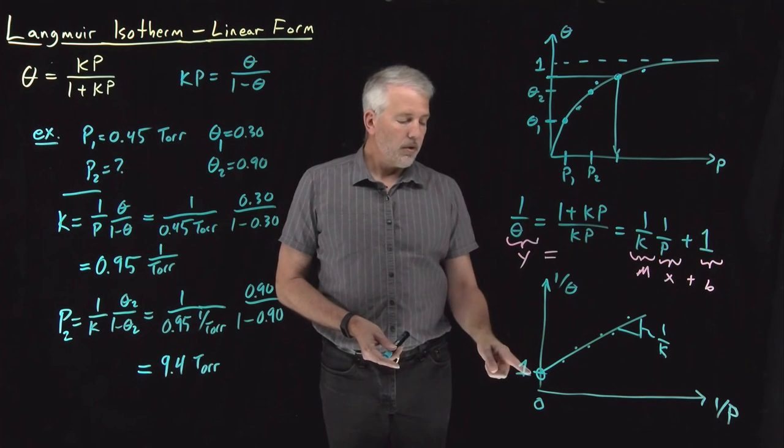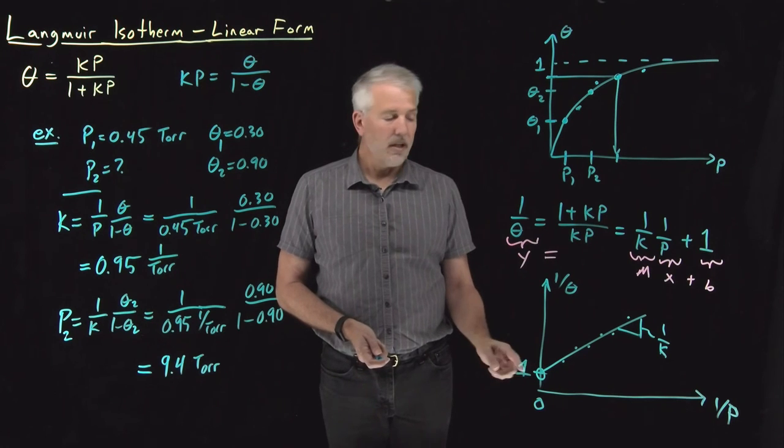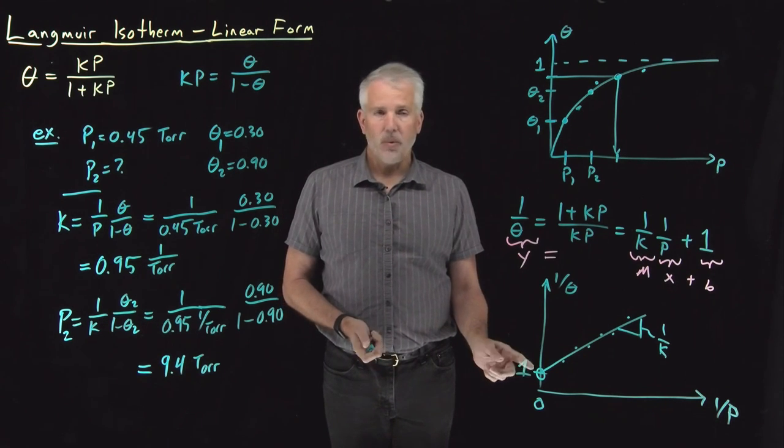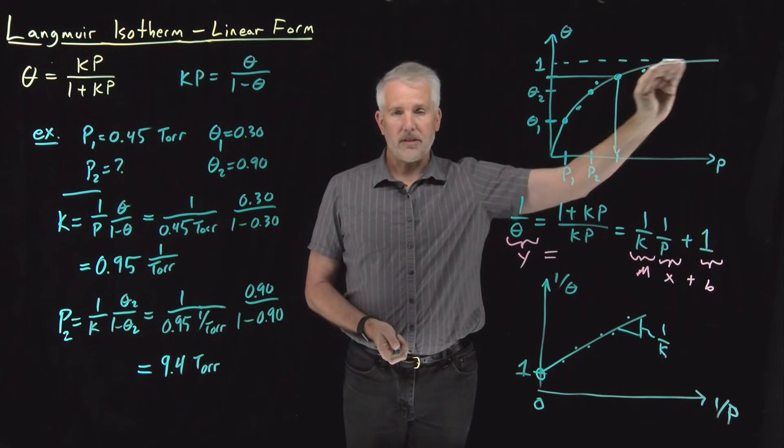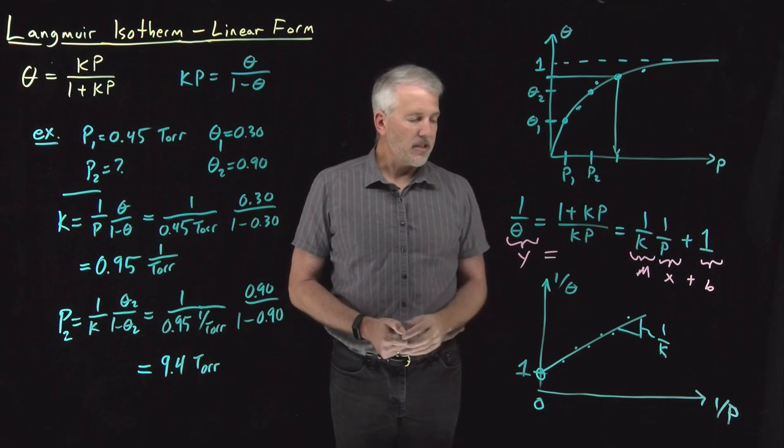So in other words, as the pressure p becomes very large, the surface coverage approaches 100 percent. One over theta is one, theta is one. We get 100 percent surface coverage at high pressures, which is something we already knew from the asymptotic behavior of this Langmuir isotherm. So the slope is all that tells us anything.